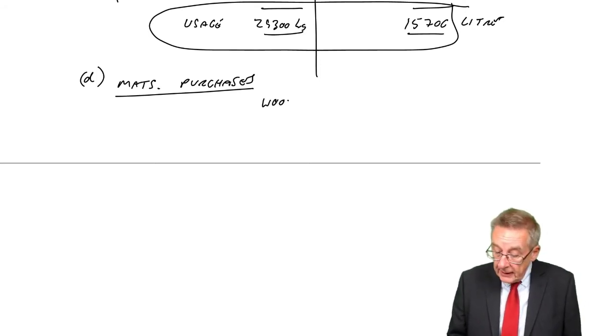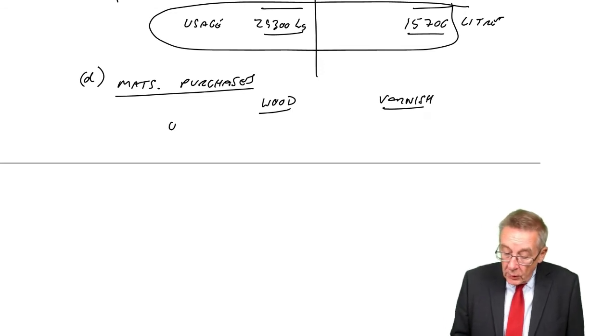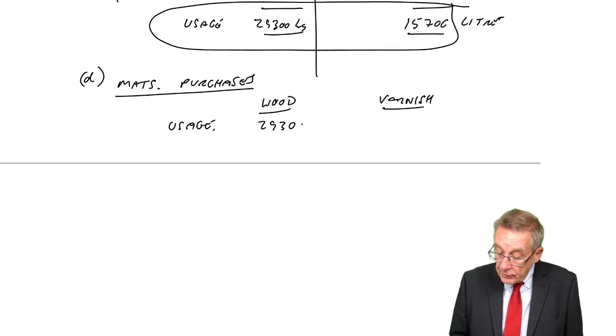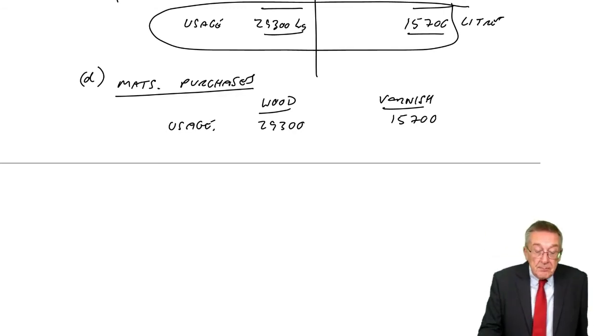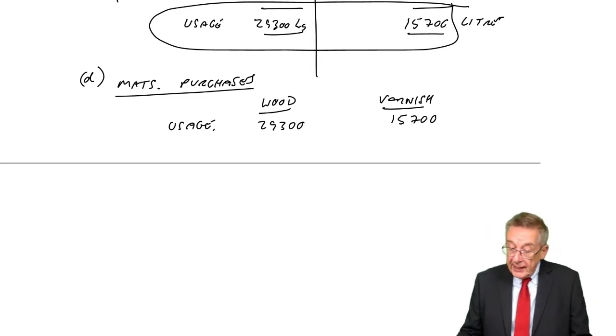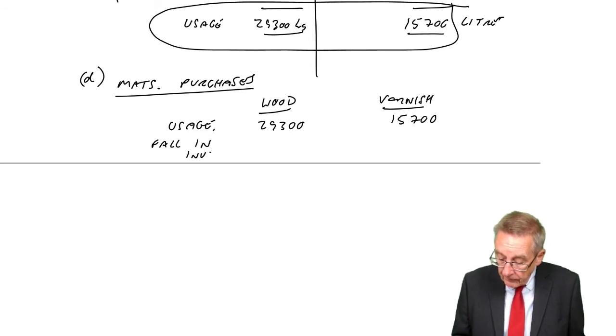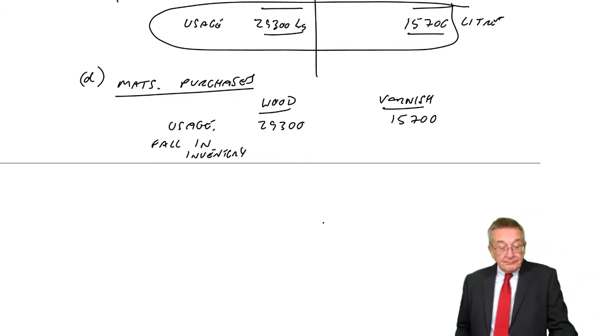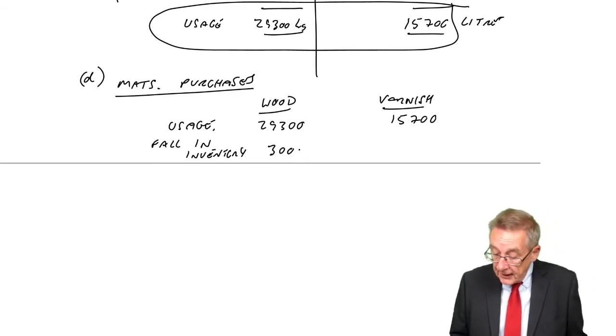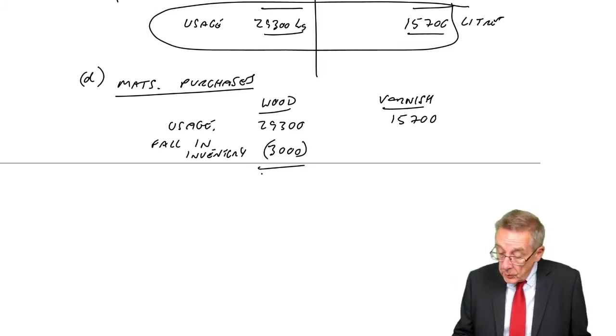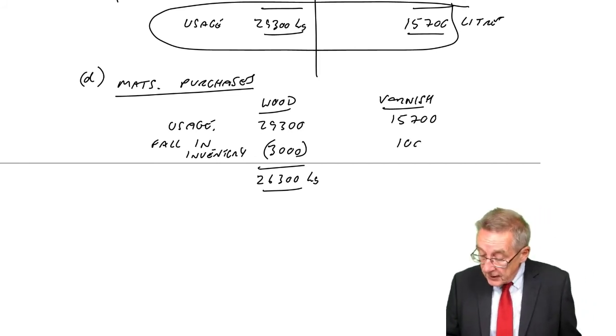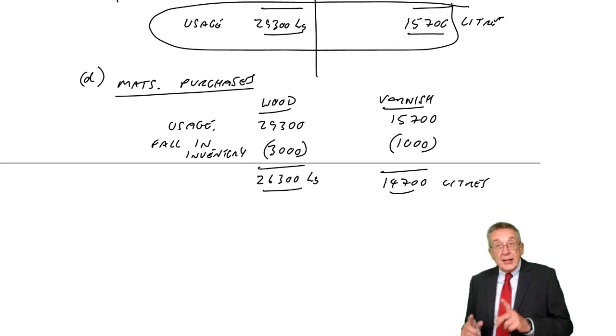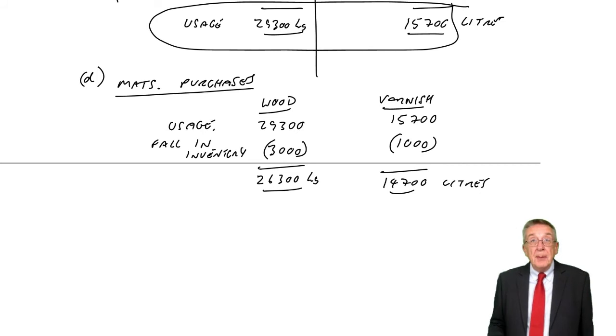Let's work out how much we need to buy: wood and varnish. We know how much we're going to use: 29,300 and 15,700. We don't need to buy all of that. In both cases, a bit of it is coming from inventory - there's a fall, a decrease in inventory. Wood, from inventory, we're taking 3,000 kilos. So if 3,000 are coming from inventory, we only need to buy the extra 26,300. For varnish, inventory is falling by 1,000 liters, so we only actually need to buy 14,700 liters.